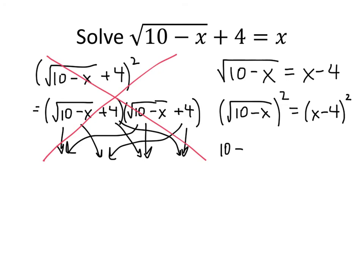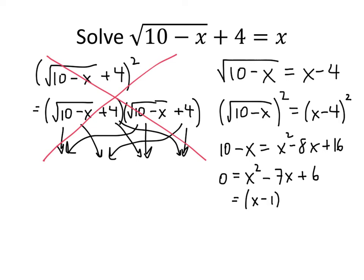On the left-hand side, squaring the square root makes it go away. On the right-hand side, we multiply out x minus 4 times x minus 4, which gives x squared minus 8x plus 16. We now have a standard quadratic: moving terms gives x squared minus 7x plus 6, which factors as x minus 1 times x minus 6, yielding x equals 1 and x equals 6. Just like before, we have to check these answers — when we check, x equals 1 doesn't work, but x equals 6 does.